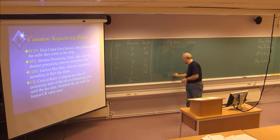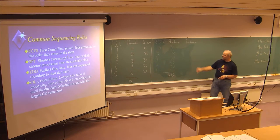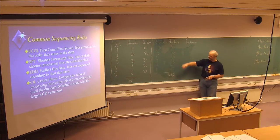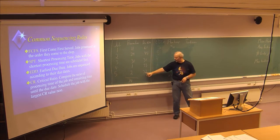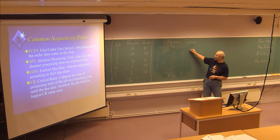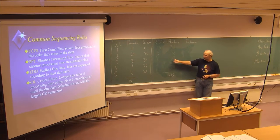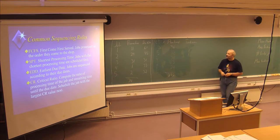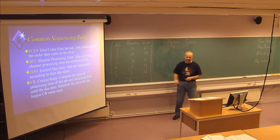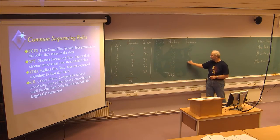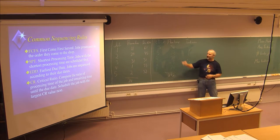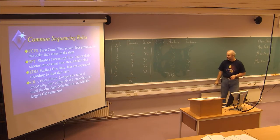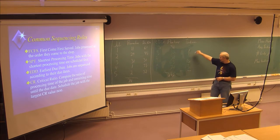Now looking at the EDD tardiness: job 3 is finished exactly on time at day 31. Job 5 is finished by day 33 but is due at day 32 — one day delayed. Job 4 is finished by day 34 but is due at day 33 — also one day delayed. Job 2 is finished by day 63 but is due at day 45 — 18 days delayed. Job 1 is finished by day 74 but is due at day 61 — 13 days delayed. The sum of tardiness is 1 plus 1 plus 18 plus 13, which equals 33.